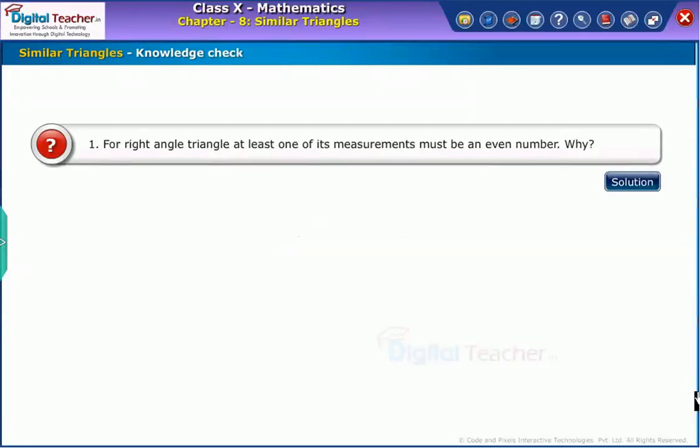Attempt the following question. You can click solution tab to verify your answer. For right angle triangle, at least one of its measurements must be an even number. Why?